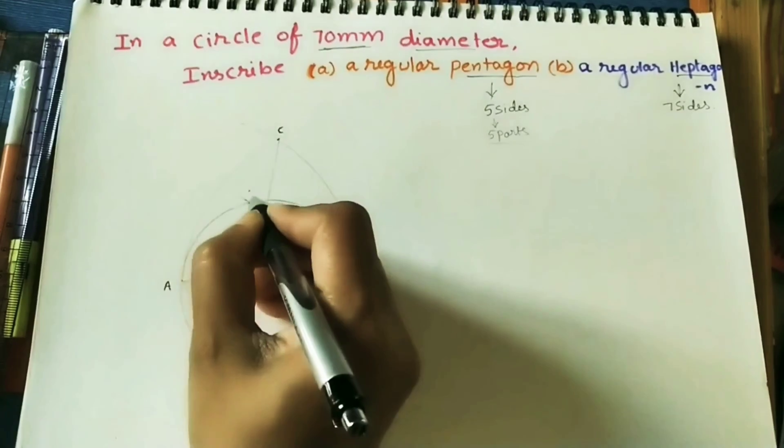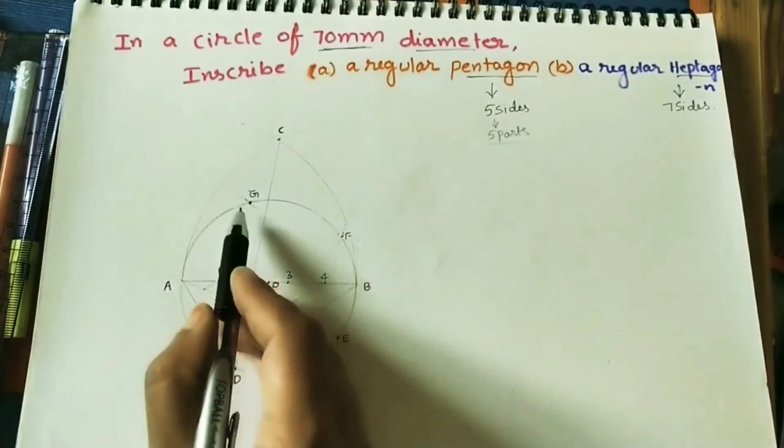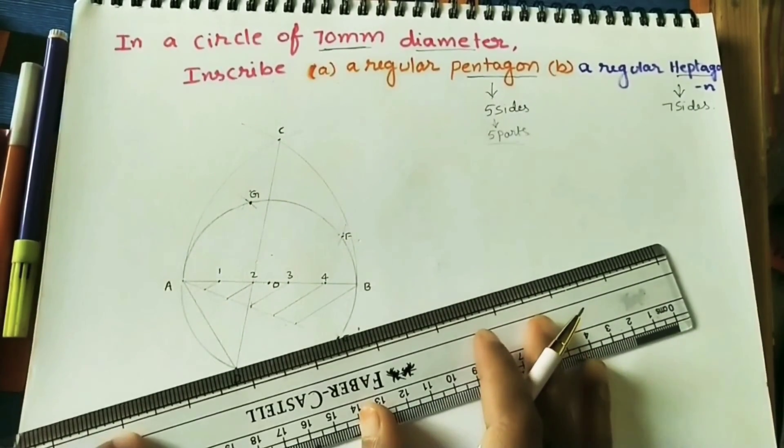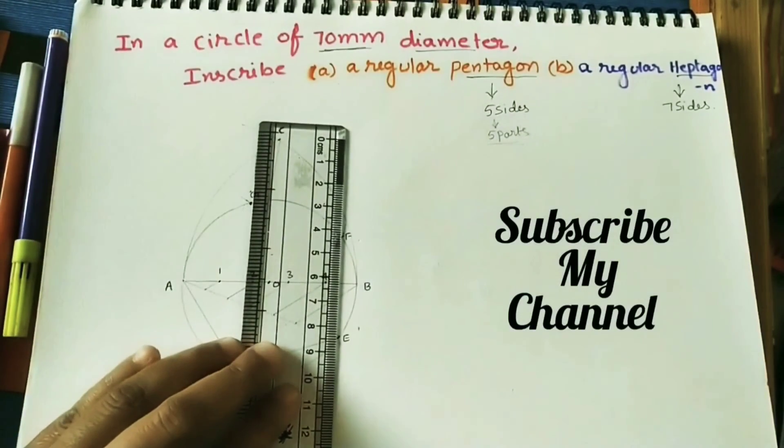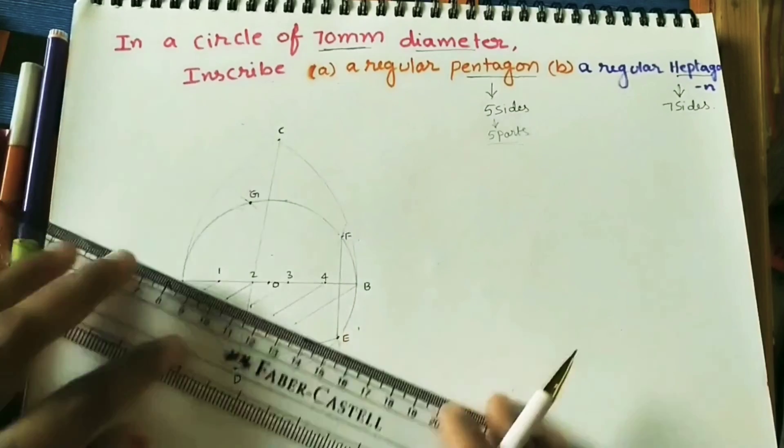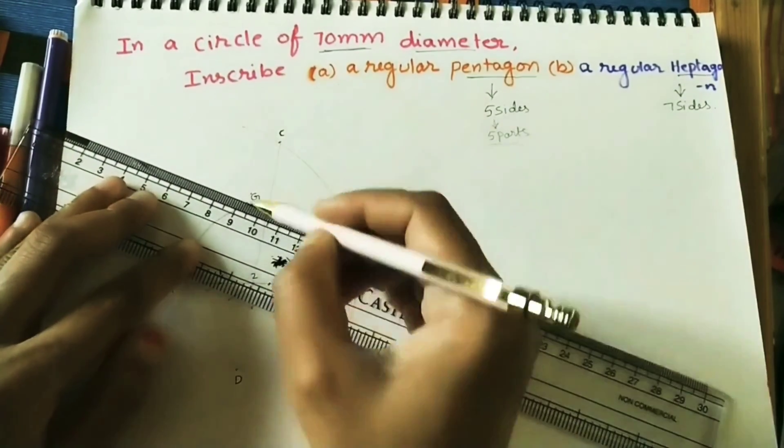Mark alphabets. Join all the alphabets. You will get the pentagon. By using scale, join all the alphabets.